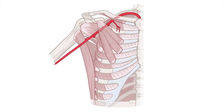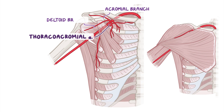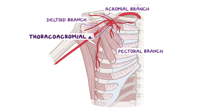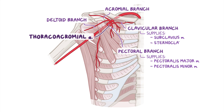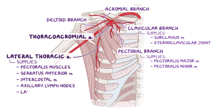The second part usually has two branches: the thoracoacromial artery and the lateral thoracic artery. The thoracoacromial artery comes out medial to the pectoralis minor as a short wide trunk and divides into four branches deep to the pectoralis major: the acromial branch toward the acromion process of the scapula; the deltoid branch passing between the deltoid and pectoralis major in the deltopectoral groove; the pectoral branch passing between the pectoralis major and minor to supply both muscles; and the clavicular branch supplying the subclavius muscle and the sternoclavicular joint. The lateral thoracic artery travels along the lateral border of pectoralis minor towards the thoracic wall to supply the pectoralis muscles, serratus anterior, intercostal muscles, axillary lymph nodes, and the lateral aspect of the breast.